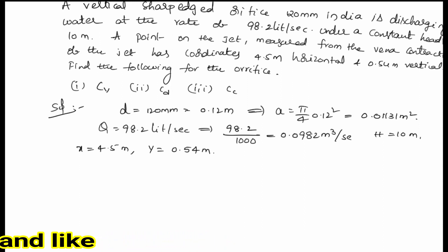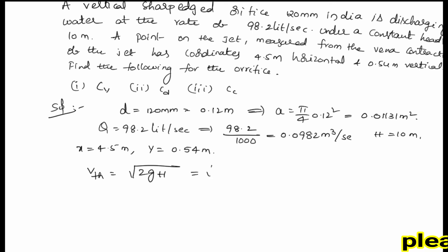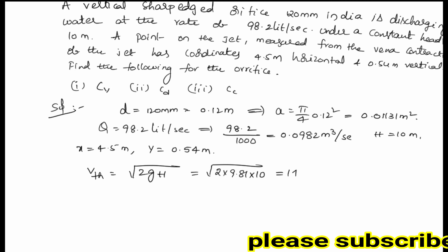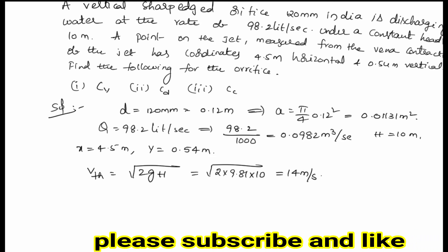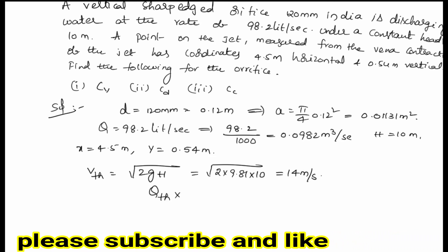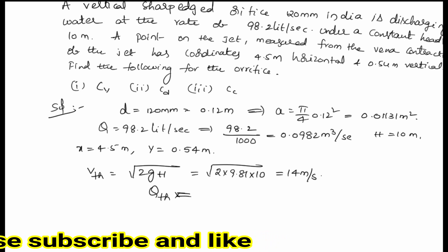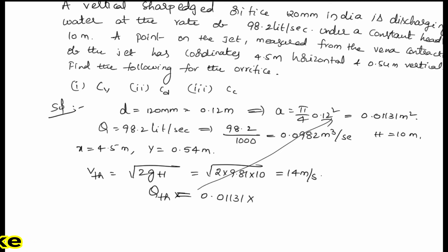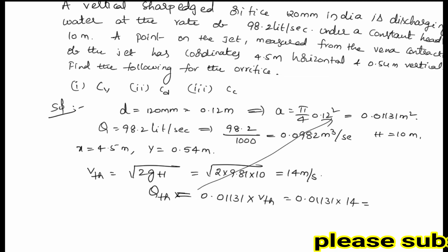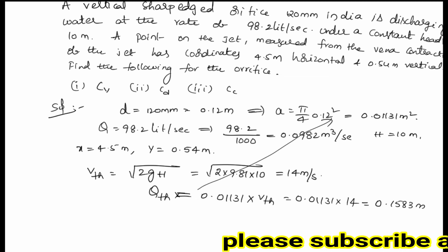Let's first calculate the theoretical velocity. V theoretical equals root of 2gH, which is root of 2 multiplied by 9.81 multiplied by 10. This gives us 14 meters per second. Next, we calculate Q theoretical. Area multiplied by V theoretical gives Q theoretical, so 0.01131 multiplied by 14 equals 0.1583 cubic meters per second.